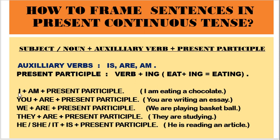Subject means I, you, we, they, he, she, it. In place of we, they, you, or he, she, it, we can even use the names of persons. For example, Meena and Tina — we can say Meena for 'she', and Bridgesh for 'he'. So they are nouns. First of all, we need to have subject or noun, and then there should be an auxiliary verb.